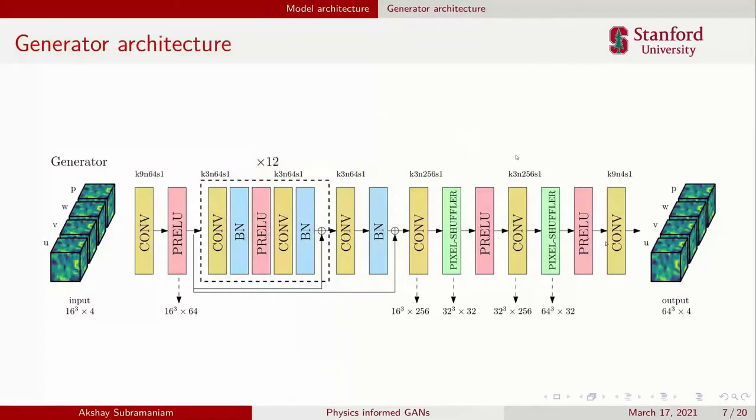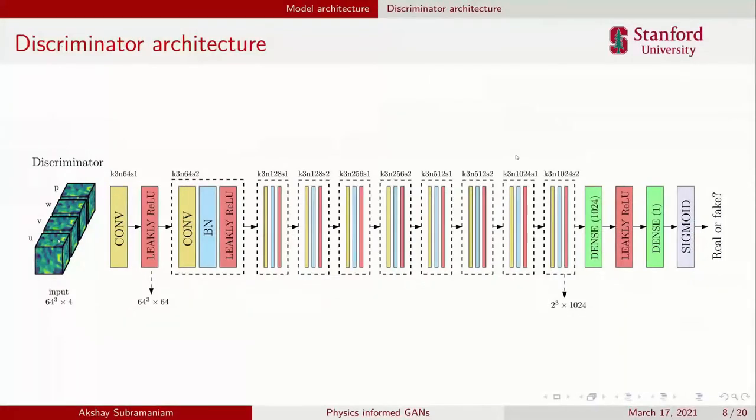I don't want to spend too much time on architectures. Essentially, we have ResNet-like convolutional layers. The generator takes in the low resolution data set, goes through convolutional layers, gets a high resolution data set at the output. The discriminator takes either real or generated high resolution samples, a few convolutional layers, and predicts the probability of it being real or fake.